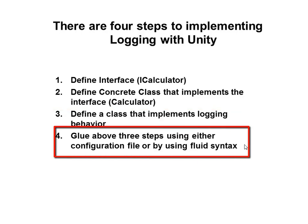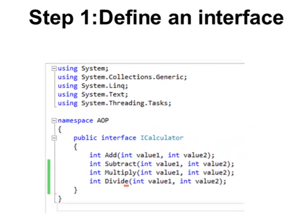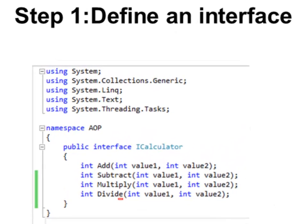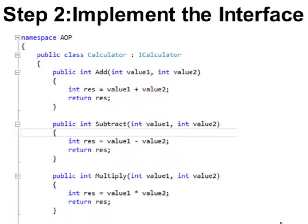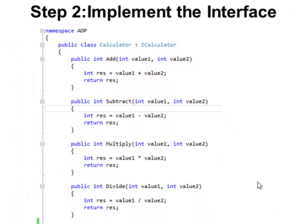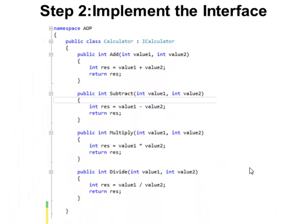And the last step is to glue the first three steps together — we can either use a configuration file or we can use fluent syntax. We have defined an interface called ICalculator with four methods: Add, Subtract, Multiply and Divide. Then we define a concrete class called Calculator which implements ICalculator, with all four methods implemented.